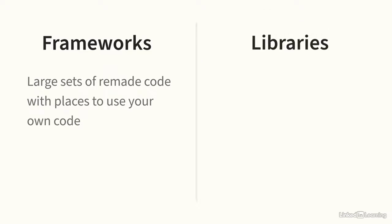Now let's talk about frameworks. A framework can be anything or everything you use in application development. It can be a single library, a collection of several, or even a bundle of something else like scripts. Here's the key difference between a framework and a library: frameworks are larger sets of pre-made code with blank areas that you fill with your own code, while libraries are smaller, more narrowly focused pieces of code that you can use in your own larger code that makes up your program.